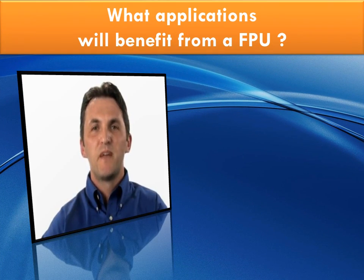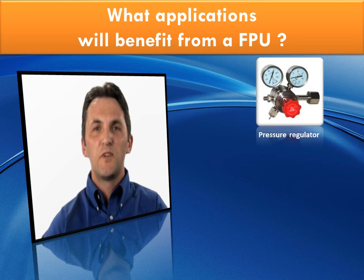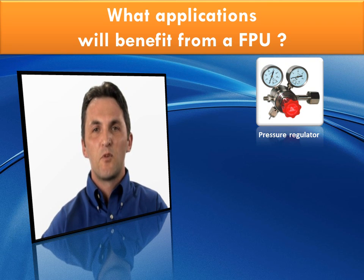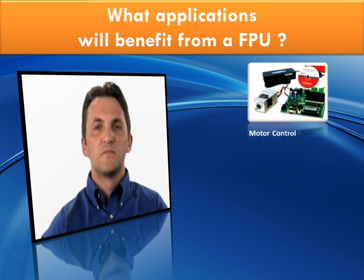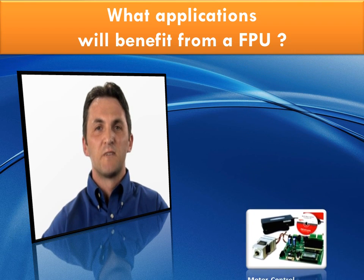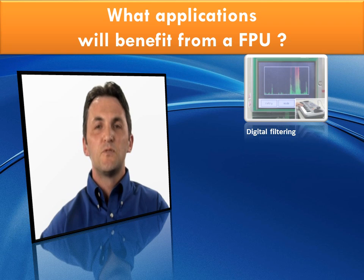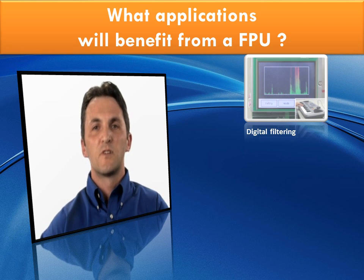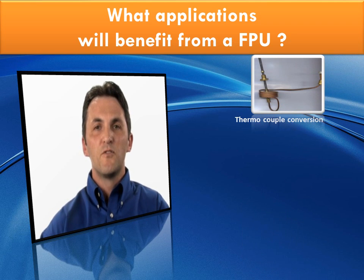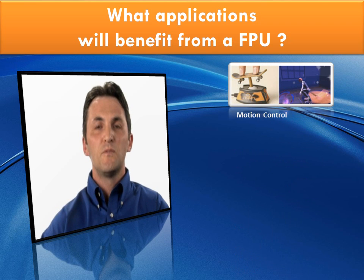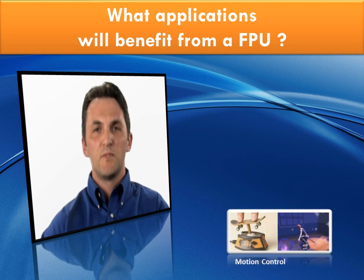Here are a few examples of applications that will benefit from having a floating point unit. Pressure regulators: different equations are used to estimate fluid pressure and provide real-time compensations to valves. Motor control: different algorithms are used to provide estimation of motor positioning and speed. Digital filtering: a floating point unit helps improve performance of digital filtering applied, for example, to audio signals. Thermocouple conversion: different algorithms are used to estimate temperature values and convert them into temperature readings. Motion control and flow control are two other examples.